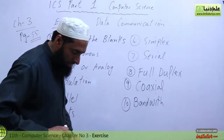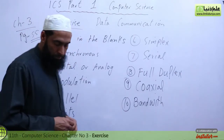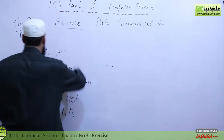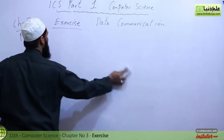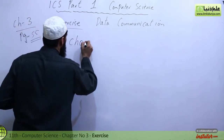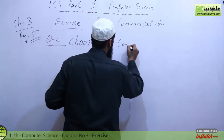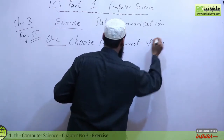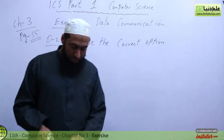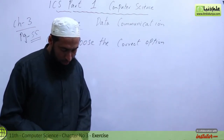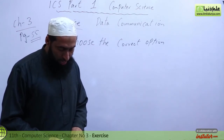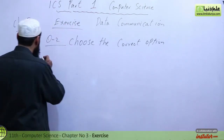Let's go to the next question: choose the correct options. Number 1: Microwave, coaxial cable, and fiber optic are examples of blank. The options are communication links, gateways, or hearing networks. The answer is communication links — option B.